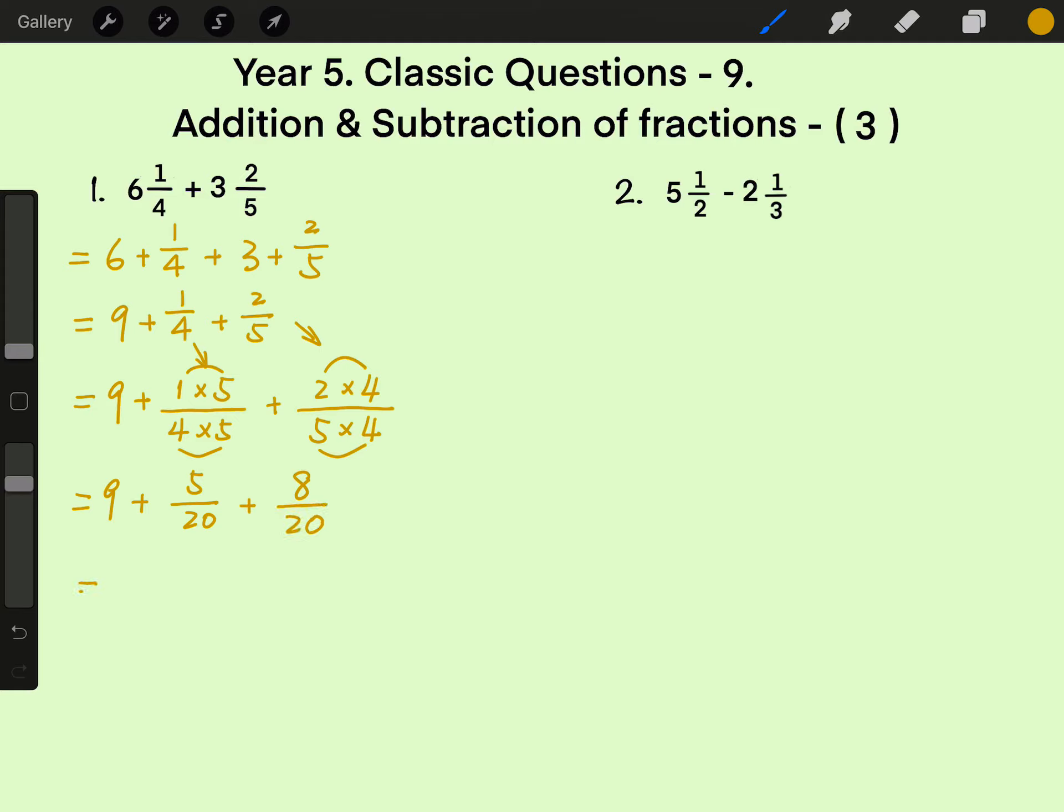Nice. Now denominators are the same. All we need to do is add numerators together. Then we can get 9 plus 13 over 20. Finally, equals to 9 and 13 over 20.